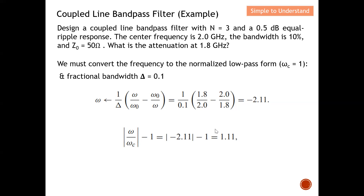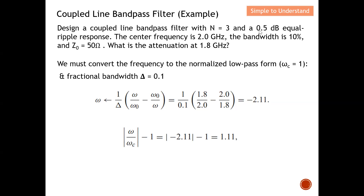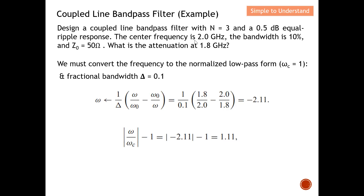Now we refer to the attenuation chart for the 0.5 dB equal-ripple response — make sure you use the correct chart. I have calculated Ω = 1.11, so I locate 1.11 on the horizontal axis, draw a line up to the n = 3 curve, and read off the attenuation. From the chart I can conclude that at 1.8 GHz the attenuation is approximately 20 dB.